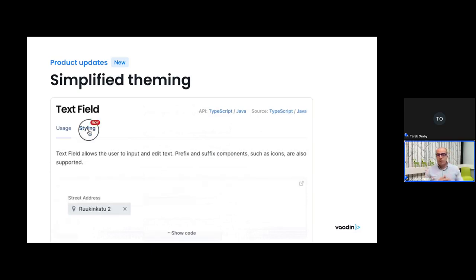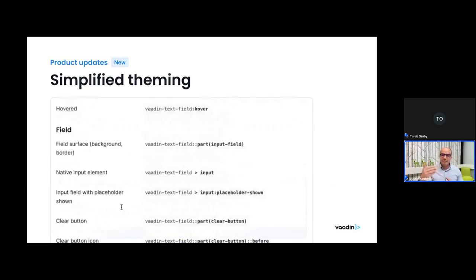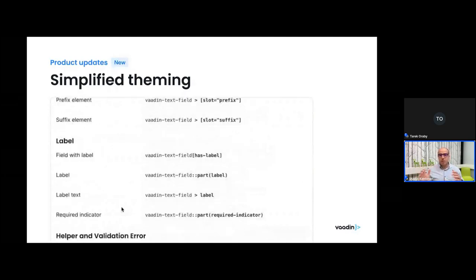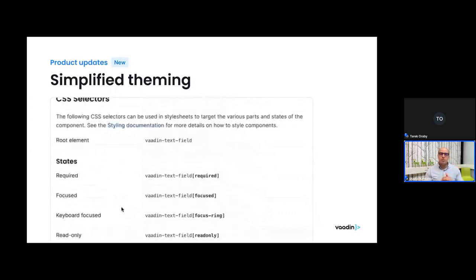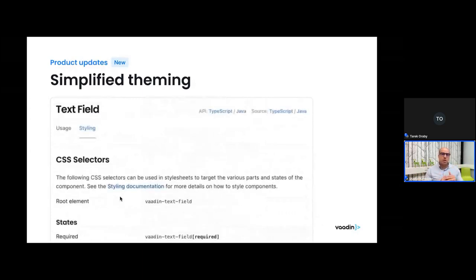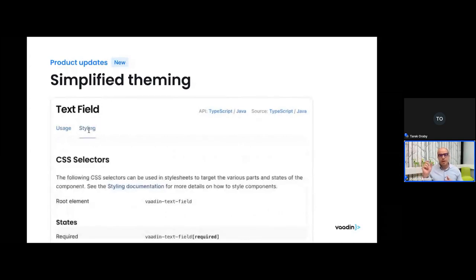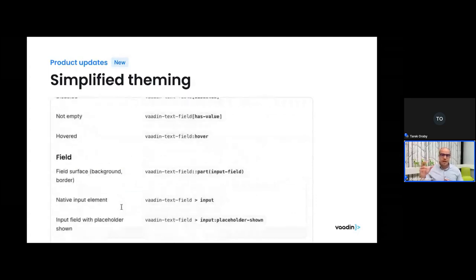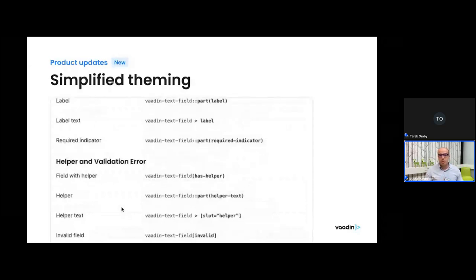In association with the simplified theming approach, there is now improved theming documentation. We now have a comprehensive list of all the selectors used for Vaadin components. Each component documentation page on vaadin.com has a styling tab containing a list of all CSS selectors, their parts, elements, state attributes, and so on, that you can use to style those components.